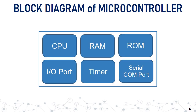In the diagram, we can see the very basic block diagram of a microcontroller. A general microcontroller consists of a Central Processing Unit (CPU), Random Access Memory (RAM), Read-Only Memory (ROM), input/output port, timer, and serial communication port.